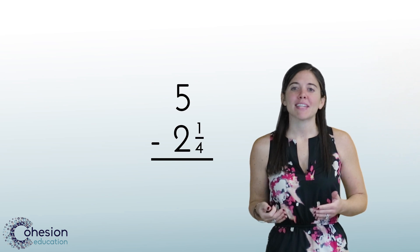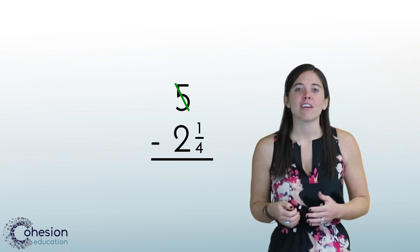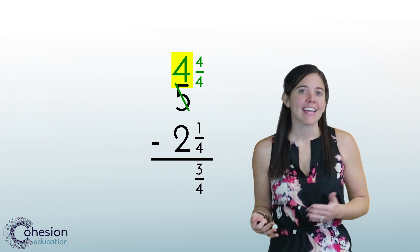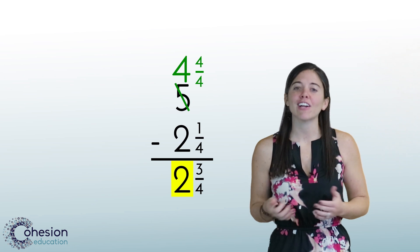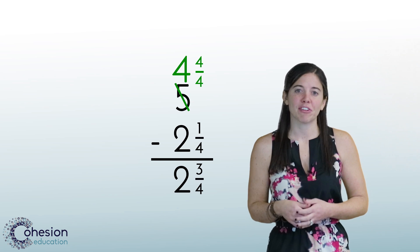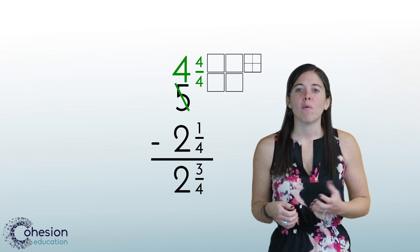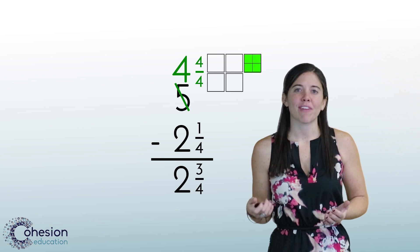When subtracting a mixed number from a whole number, students are often initially confused because they're not used to turning a whole number into a mixed number. Encourage students to rely on their experience with regrouping mixed numbers as the same logic applies. Take one whole and turn it into its fraction equivalent.